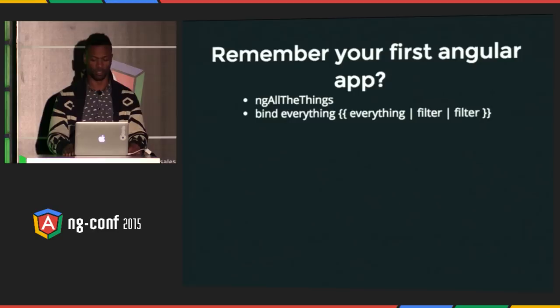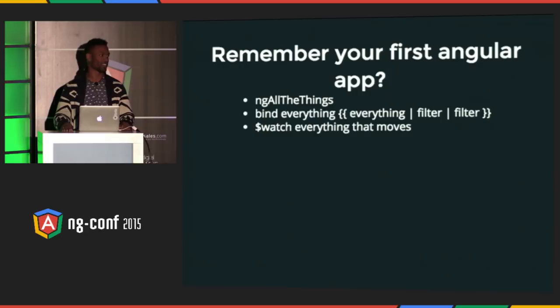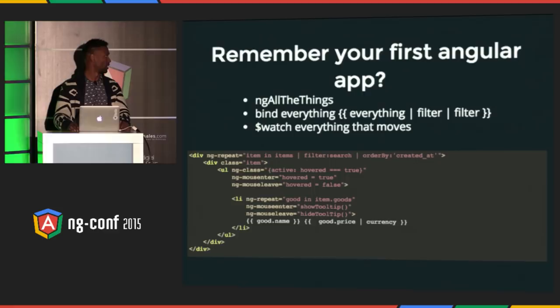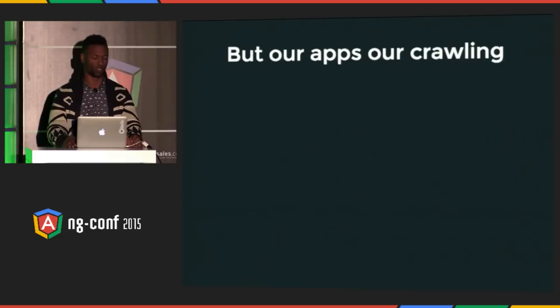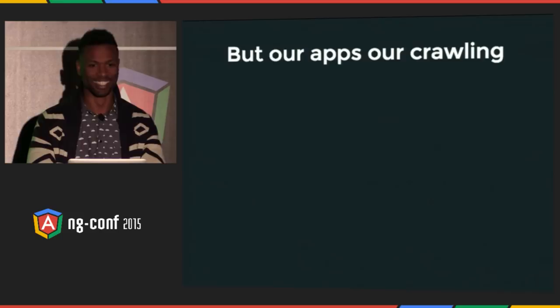You'd watch everything that moves in the app, do something, go to the server and come back. I literally grabbed code I found on the internet from somebody who was learning Angular — and I think it's a production app. They're just not taking a lot into consideration, not thinking about ng-repeat and stuff like that. Because of those bad habits your apps are probably crawling, really janky. But it was so fun, right? ng-everything. Our users are disappointed but our developers are having fun.